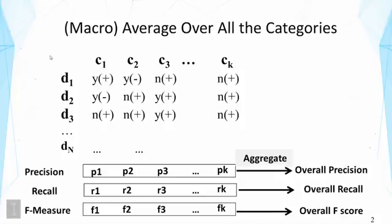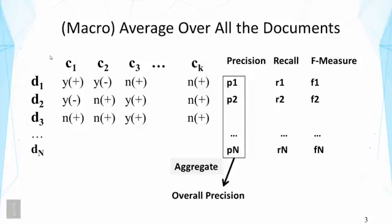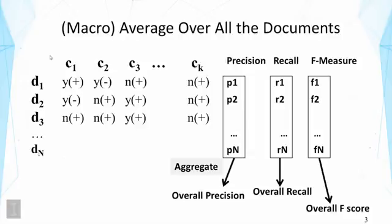Similarly we can do that for recall and F score — that's how we generate the overall precision, recall, and F score. We can do the same for aggregation over all the documents. For each document we compute precision, recall, and F, and then after completing computation for all documents we aggregate them to generate overall precision, overall recall, and overall F score. These examine results from different angles, and comparing different methods in different dimensions may reveal which method is better in which measure or situation, providing insight for understanding strengths and weaknesses.